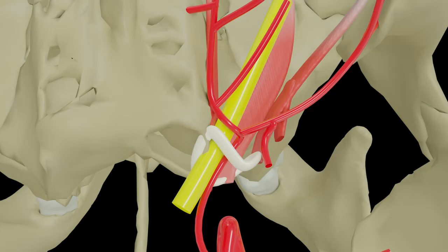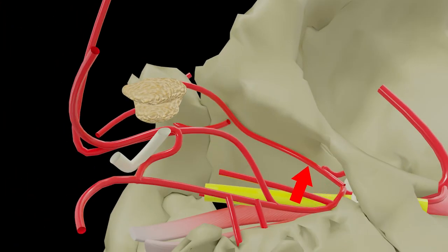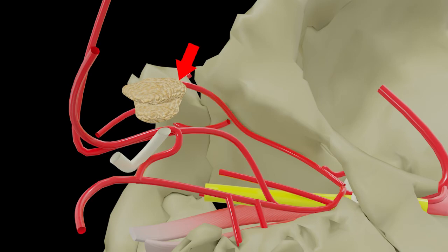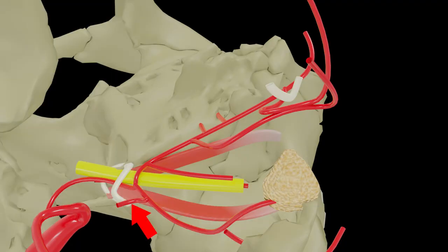The next major branch is the lacrimal artery, which runs along the lateral wall of the orbit. It gives off muscular branches for the muscles of the orbit, two zygomatic branches (zygomaticofacial and zygomaticotemporal), and lateral palpebral branches for the eyelid, and finally ends by supplying the lacrimal gland. Near its origin it also gives off a recurrent meningeal branch which re-enters the cranial fossa through the superior orbital fissure and supplies the middle cranial fossa.